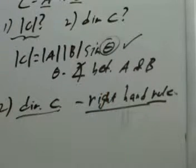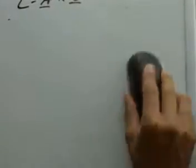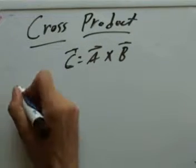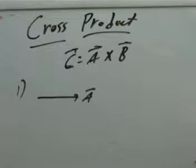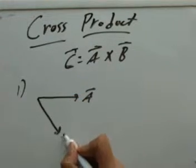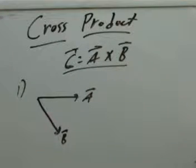Let's look at an example of the cross product. Getting the direction of C is usually the hard thing students have the most trouble with. Remember, you're always crossing A into B — the order matters. So C equals A cross B. First example: suppose you have an A vector pointing to the right — this could be a velocity, momentum, or anything like that — and suppose vector B points down. If I'm going to cross A into B, what would the direction be?